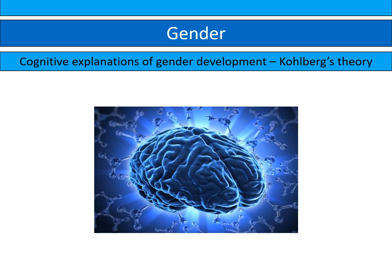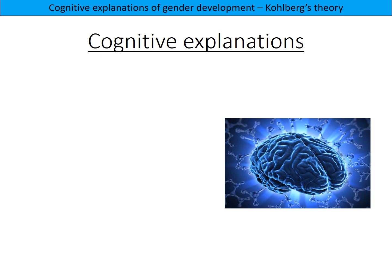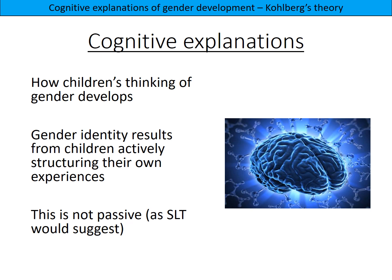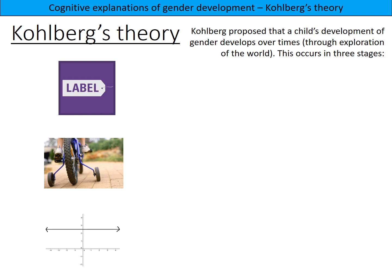During this screencast we're going to look at one of the cognitive explanations of gender development: Kohlberg's theory. By cognitive explanations, we look at how children's thinking of gender develops, and gender identity results from children actively structuring their own experiences. They're not just passive observers of behaviors, as social learning theory would suggest. Cognitive explanations have that more active element.